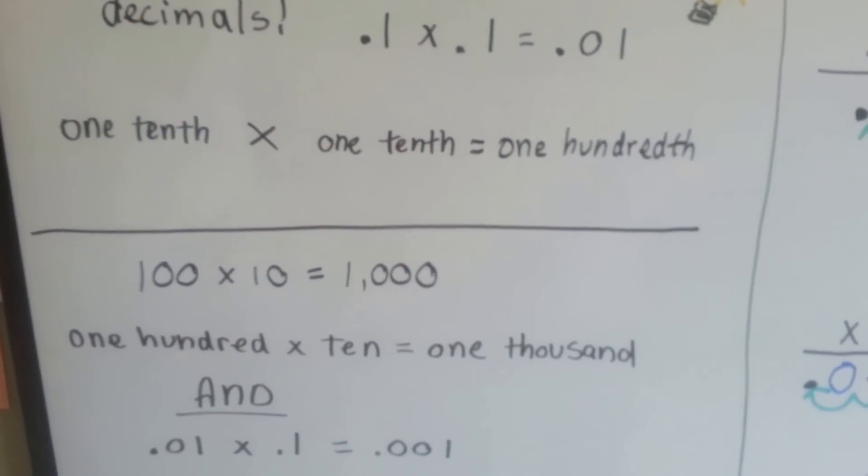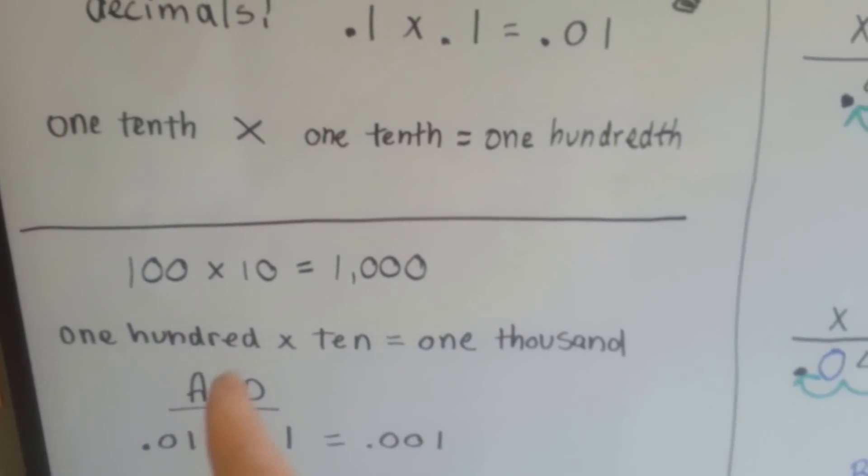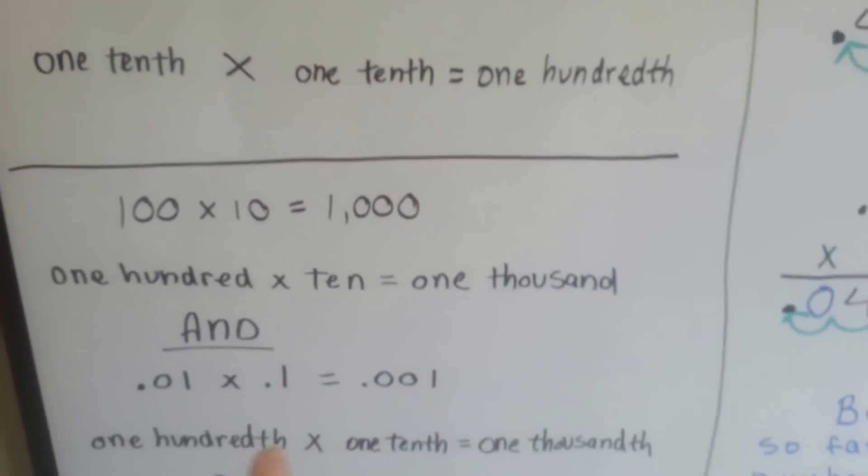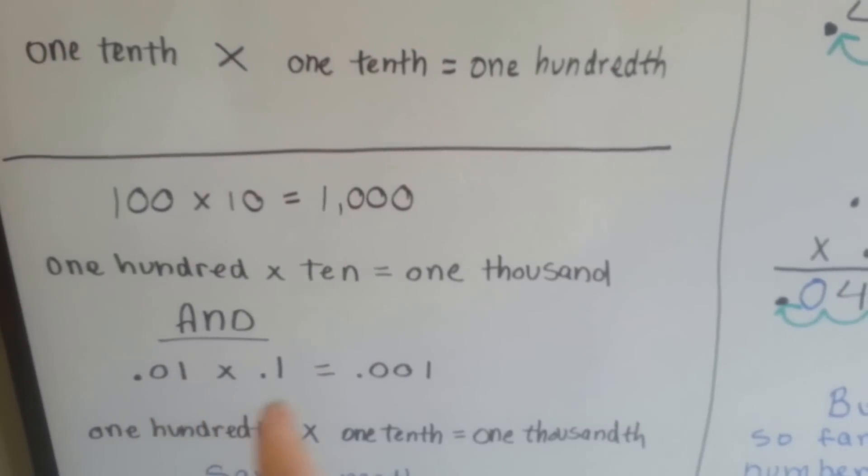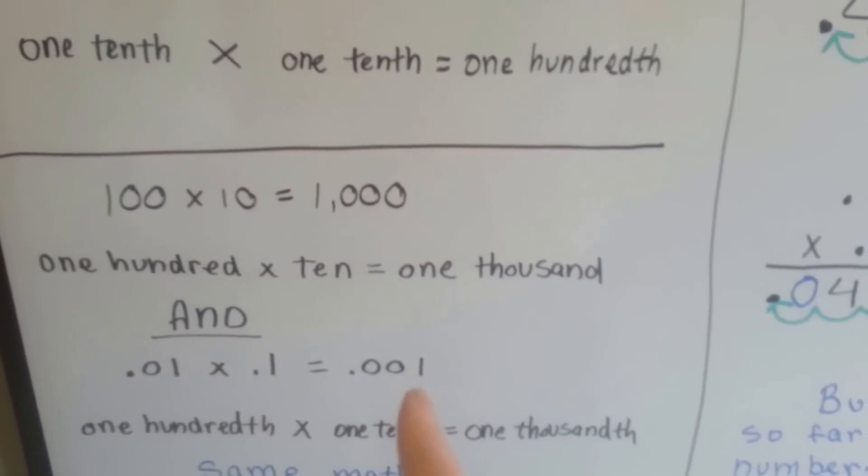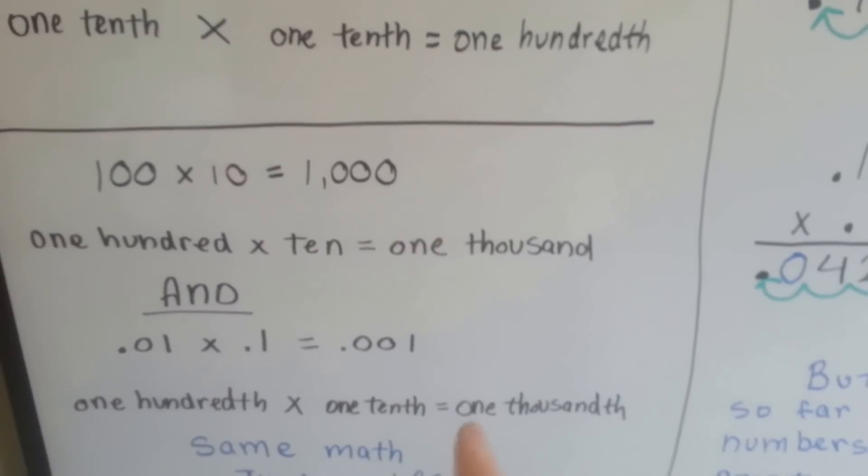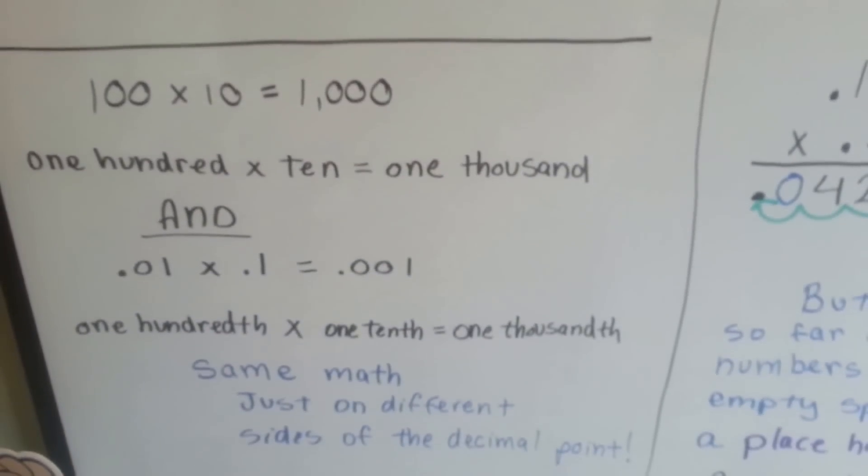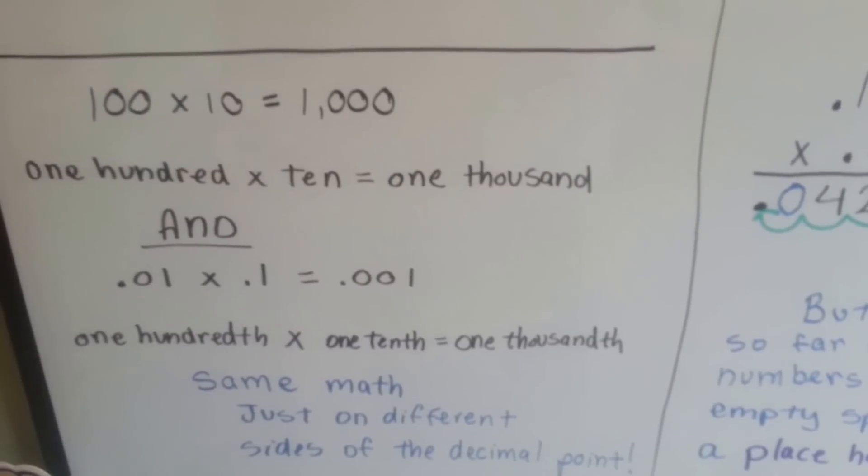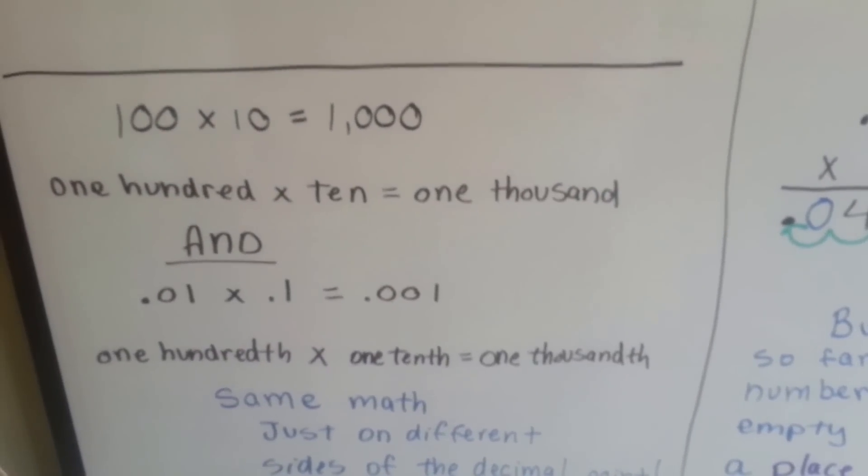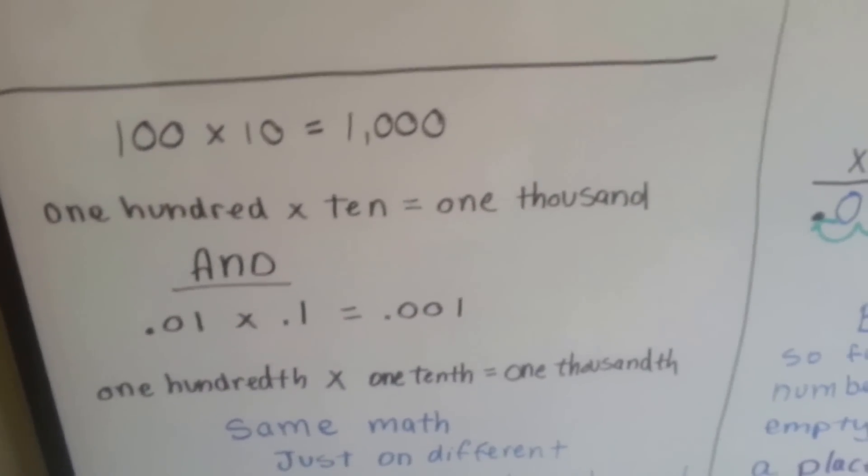One-hundred times ten is a thousand, right? One-hundred times ten equals one-thousand. Well, one-hundredth times one-tenth is one-thousandth. One-hundredth times one-tenth is one-thousandth. Same math, just on different sides of the decimal point. So I want you to keep that in mind when you're multiplying with decimals.